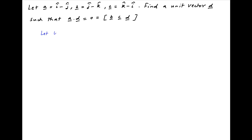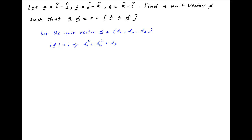Let the three components of the unit vector d be d1, d2, d3. Since d is a unit vector, the absolute value of vector d is equal to 1, which implies that d1² + d2² + d3² = 1. Let's call this condition 1.